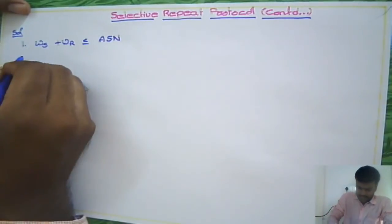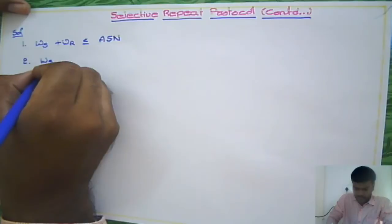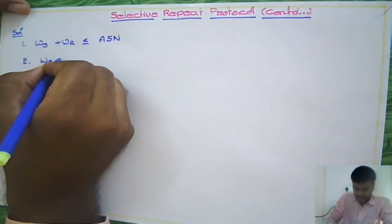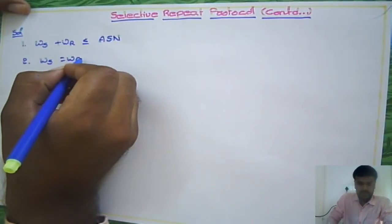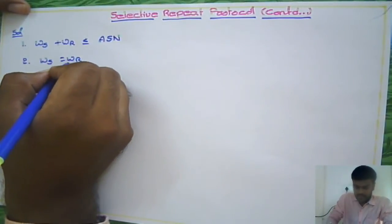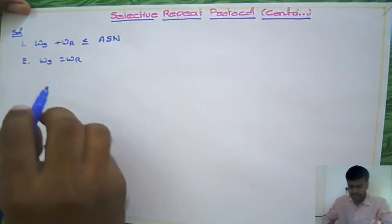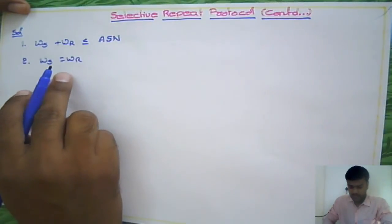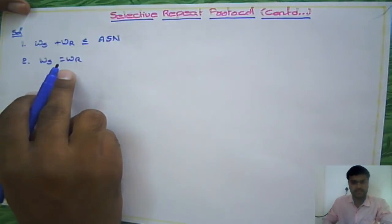The second condition is that both window sizes — sender and receiver — should always be equal. With these two conditions, the problem of lost acknowledgements will be solved.